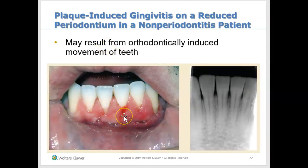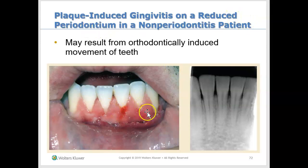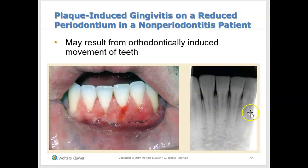The second category is gingivitis on a reduced periodontium in a non-perio client. Here we do see some recession, especially at the canine, which is why we say this person has a reduced periodontium. But the reason for the recession may be orthodontic treatment — braces can sometimes cause recession. However, if you look at the bone level, it's intact.